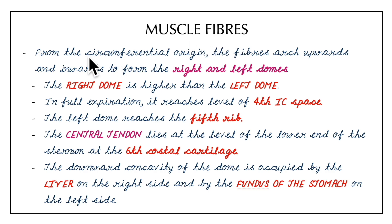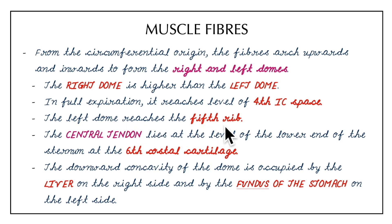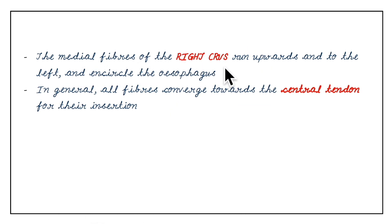To summarize the muscle fibers: from the circumferential origin, the fibers arch upwards and inwards to form the right and left domes. The right dome is higher; in full expiration it reaches the 4th intercostal space, while the left dome reaches the 5th rib. The central tendon lies at the level of the lower end of the sternum at the 6th costal cartilage. The downward concavity is occupied by the liver on the right and the fundus of the stomach on the left. The medial fibers of the right crus encircle the esophagus, and all fibers converge towards the central tendon.